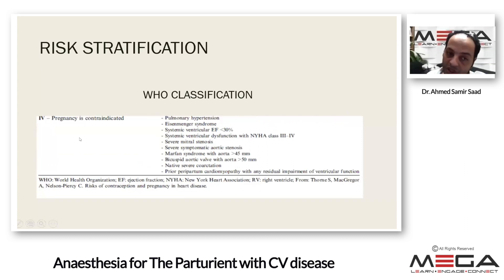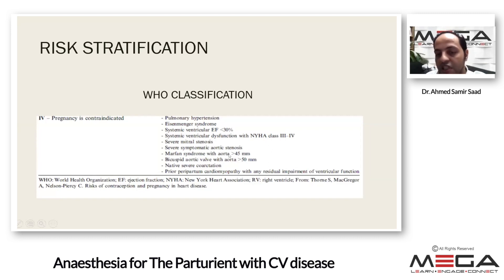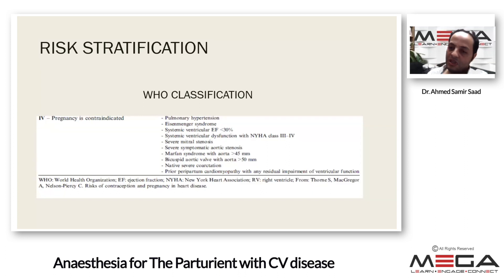Category four: pregnancy is contraindicated. Patients in this category should be advised not to get pregnant due to very great risk. This includes severe pulmonary hypertension, Eisenmenger syndrome, systemic ventricular ejection fraction less than 30%, systemic ventricular dysfunction with NYHA class 3 to 4, severe mitral stenosis, severe symptomatic aortic stenosis, Marfan syndrome with aortic dilatation more than 4.5 cm, bicuspid aortic valve with aorta more than 5 cm, severe coarctation, and patients who previously had peripartum cardiomyopathy.